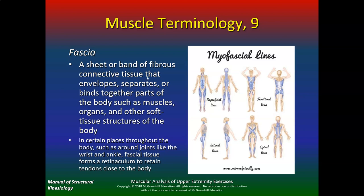Fascia is a sheet or band of fibrous connective tissue that envelops, separates, or binds together parts of the body such as muscles, organs, and other soft tissue structures. In certain places like around joints such as the wrist and ankle, fascia tissue forms a retinaculum to retain tendons close to the body. Instead of just statically stretching one way, if you stretch along the fascial lines you'll get a better result.